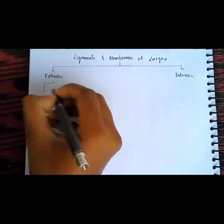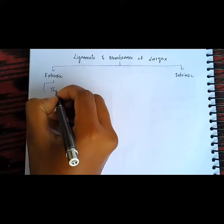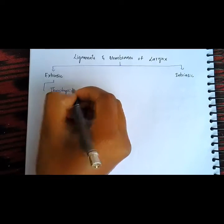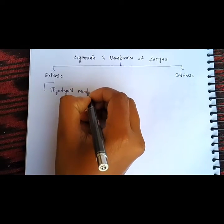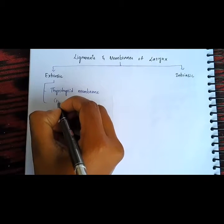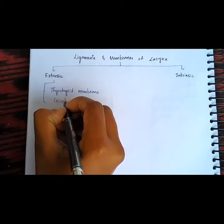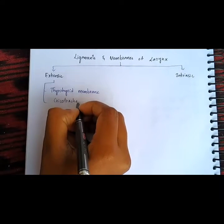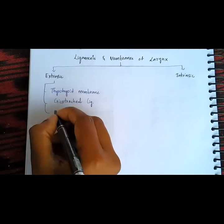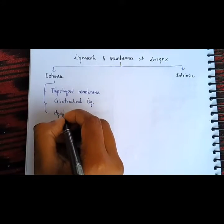The extrinsic ones are: the thyrohyoid membrane, the cricotracheal ligament, and the hyoepiglottic ligament.